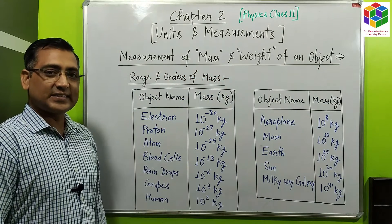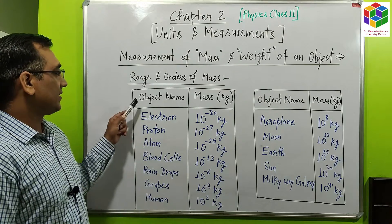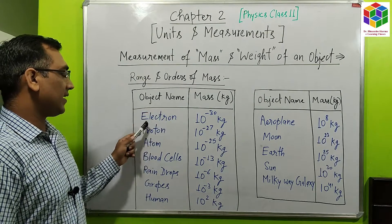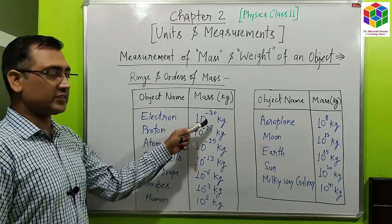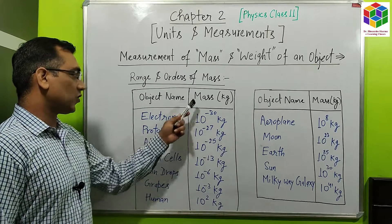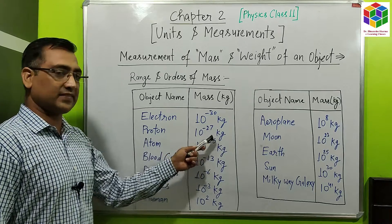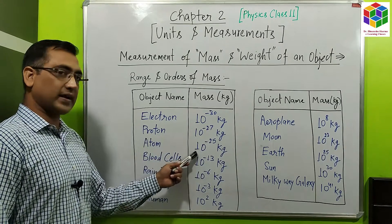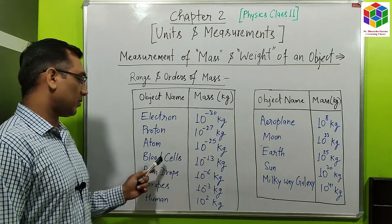Now let us see some example masses of various objects. We have objects like the electron — the mass of an electron is 10⁻³⁰ kg, the mass of a proton is 10⁻²⁷ kg, and the mass of an atom is 10⁻²⁵ kg.